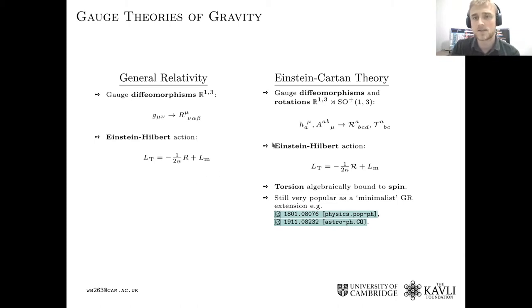But if we wanted to expand the symmetry group, we could also consider rotations, Lorentz rotations. And this will give us the Poincaré group. There are going to be two potential fields, the tetrads and the spin connection, and two field strength tensors. So you have the Riemann tensor and the torsion tensor. If you form the same Einstein-Hilbert Lagrangian, you end up with something called Einstein-Cartan theory.